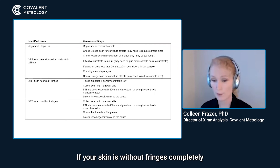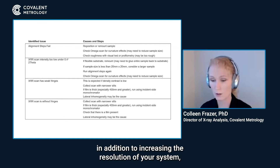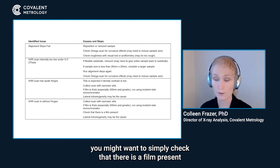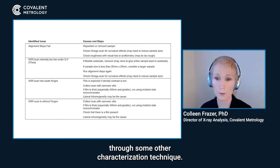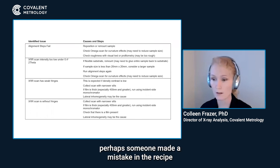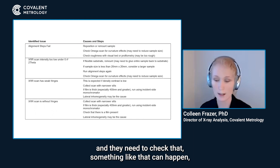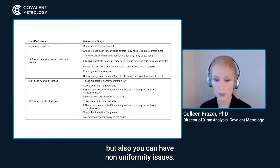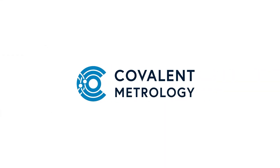If your scan is completely without fringes, in addition to increasing the resolution of your system, you might want to simply check that there is a film present through some other characterization technique. Perhaps it's on the other side, or perhaps someone made a mistake in their recipe and they need to check that. You can also have non-uniformity issues.